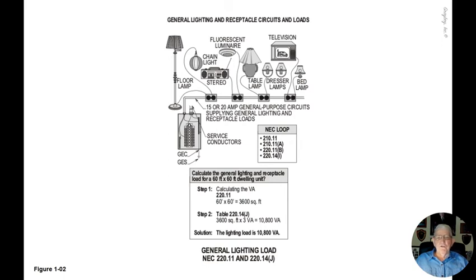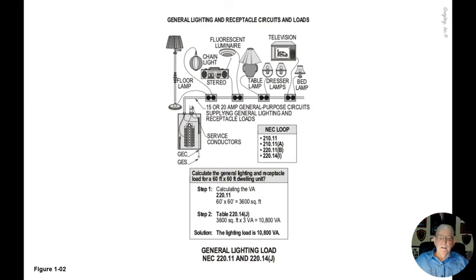The requirement is to calculate the general lighting and receptacle load for a 60 by 60 square foot dwelling in accordance with 220.11. In Step 1, we calculate the VA and apply 220.11 by taking 60 by 60 square feet times 3 VA per square foot. In Step 2, that equals 10,800 VA. So after reviewing Step 1 and Step 2, the total VA for the lighting load and receptacle load is 10,800.